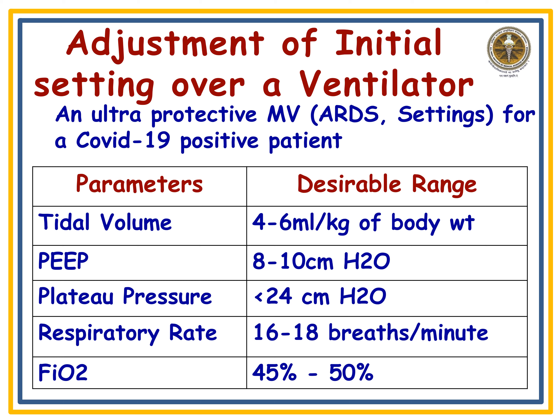The ARDS parameters and desirable ranges are: tidal volume kept at a very low range of 4 to 6 ml per kg of body weight (compared to 8 ml/kg for other patients); PEEP kept at a high range of 8 to 10 cmH2O (compared to the usual starting PEEP of 5 cmH2O); and plateau pressure kept below 24 cmH2O.